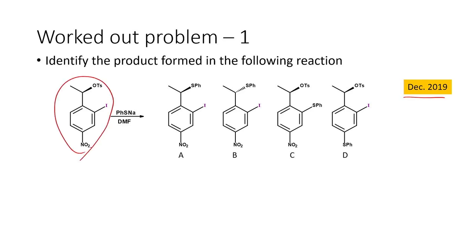This problem appeared in December 2019. Identify the product formed in the following reaction. A starting material is given — a nitro-iodo derivative with a good leaving group, OTs — treated with PhSNa in DMF solvent. We have to find out what product is formed in this reaction.